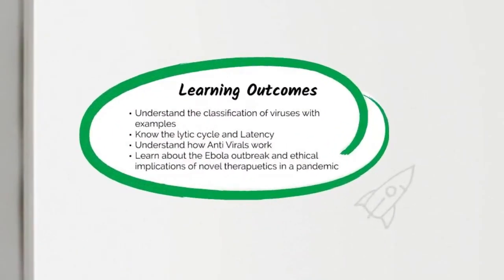The learning outcomes are: firstly, you need to understand the classification of viruses; secondly, you need to know the lytic cycle — how the virus actually infects and eventually kills cells; thirdly, you need to know that viruses are not living cells and possible ways to treat viral infections; and finally, you need to know an example of a viral outbreak, specifically Ebola, including what happened and some of the ethical implications of using novel drugs during that time.